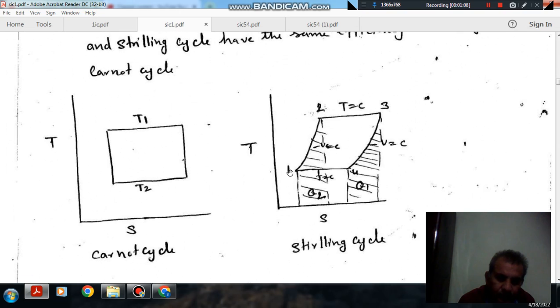And this is your Sterling cycle with constant volume, heat addition and heat rejection at constant volume. So, here all the heat rejected is supplied to this process, one-two process. So, it means there is no heat rejection overall between individual processes.